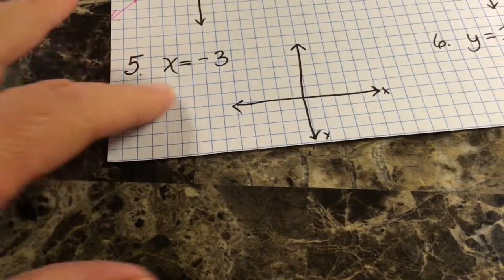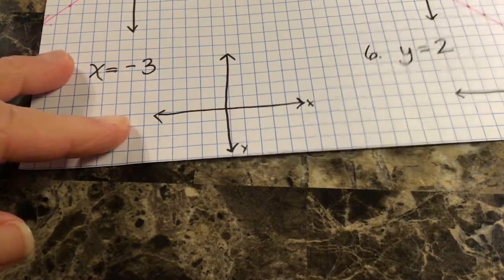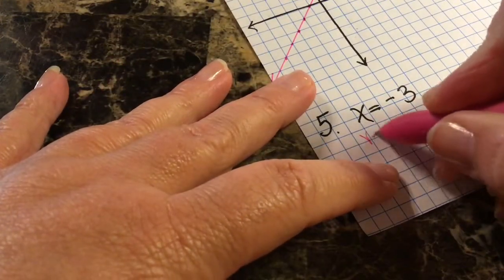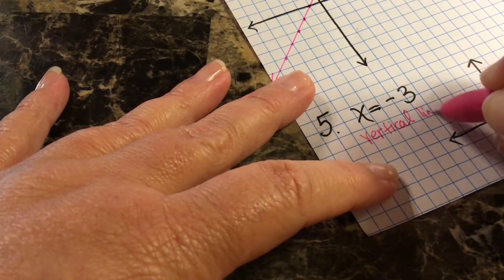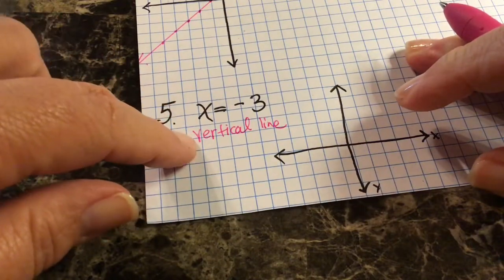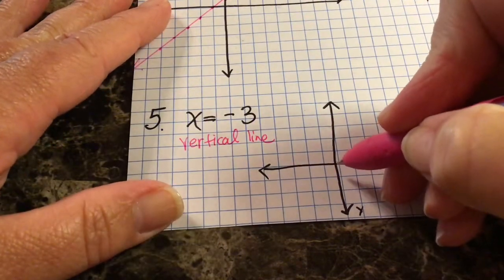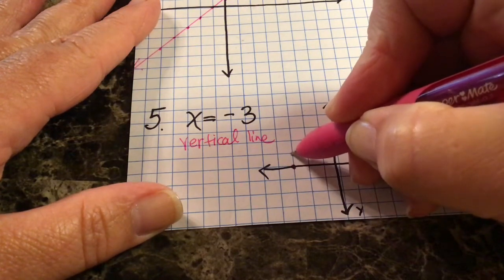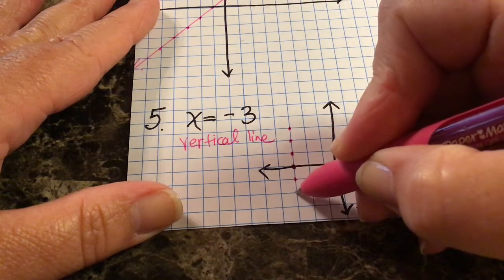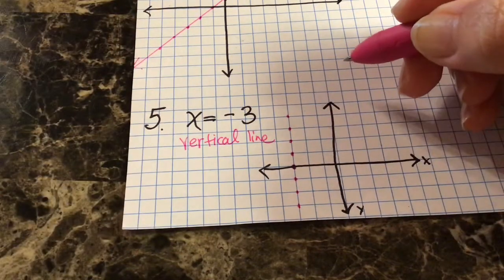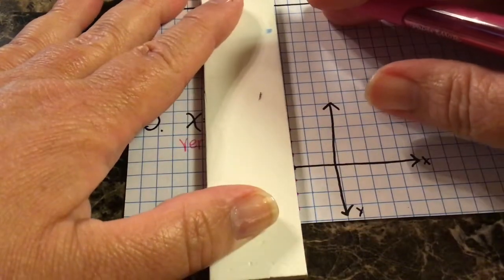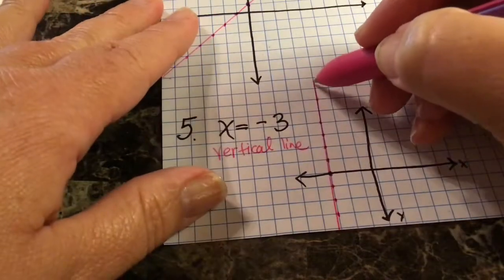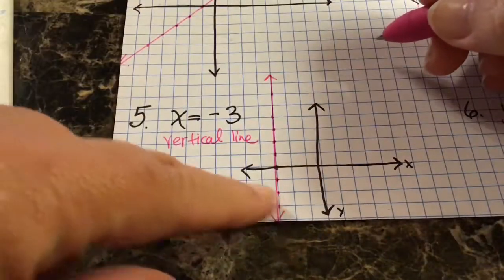For number five, there's no y in the equation. When you only have an x without a y, you have a vertical line. This says x equals negative three, so from the origin go to negative three on the x-axis — one, two, three. Everywhere on this vertical line, x is negative three. Draw that vertical line.